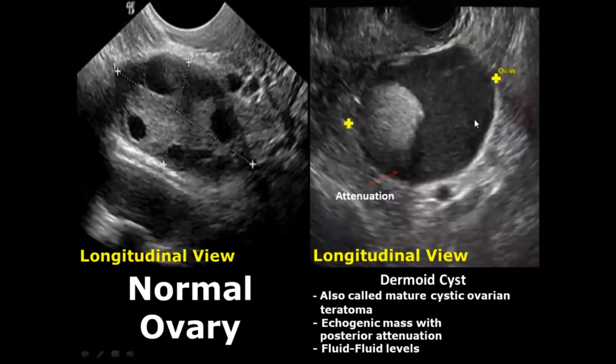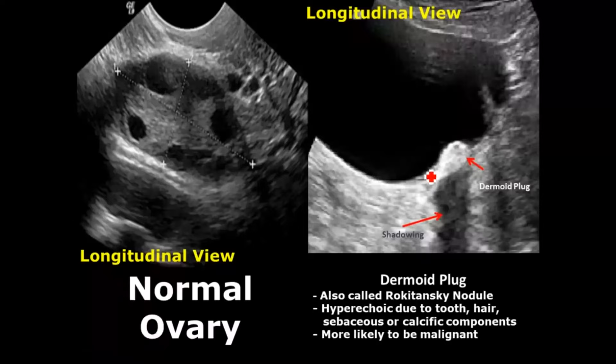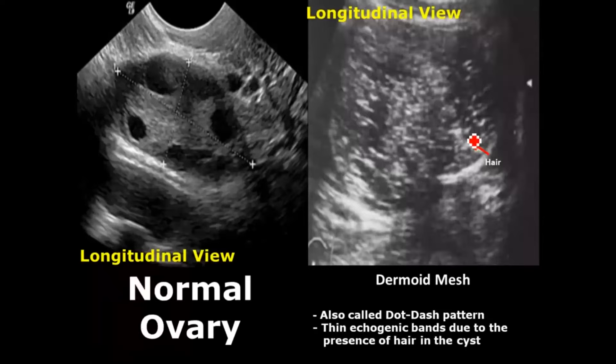Mature cystic teratomas are also called dermoid cysts — they are echogenic masses with attenuation and fluid-fluid levels from two different fluids with different densities. The dermoid plug, also called the Rokitansky nodule, is a hyperechoic structure due to hair, tooth, sebaceous, or calcific components. The dermoid mesh gives a dot-dash pattern from thin echogenic bands.